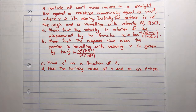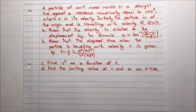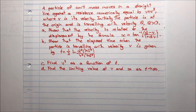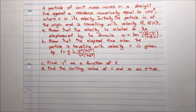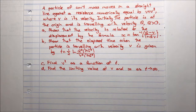A particle of unit mass moves in a straight line against a resistance numerically equal to v plus v cubed, where v is its velocity. Initially the particle is at the origin and is travelling with velocity q, where q is greater than zero.